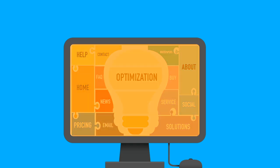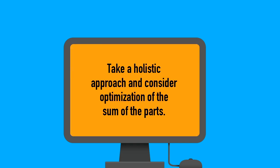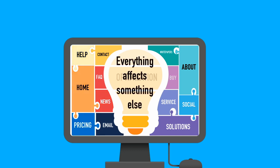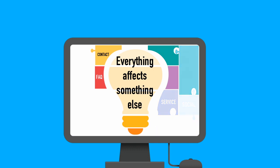Benji Rabin believes this is where many companies go wrong. He suggests we need to take a holistic approach and consider optimization of the sum of the parts. No single component works in isolation — everything affects something else. Our websites are a reflection of an ecosystem.